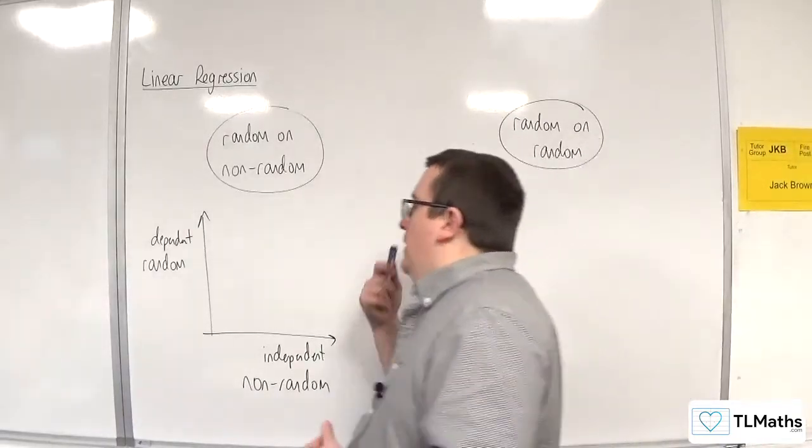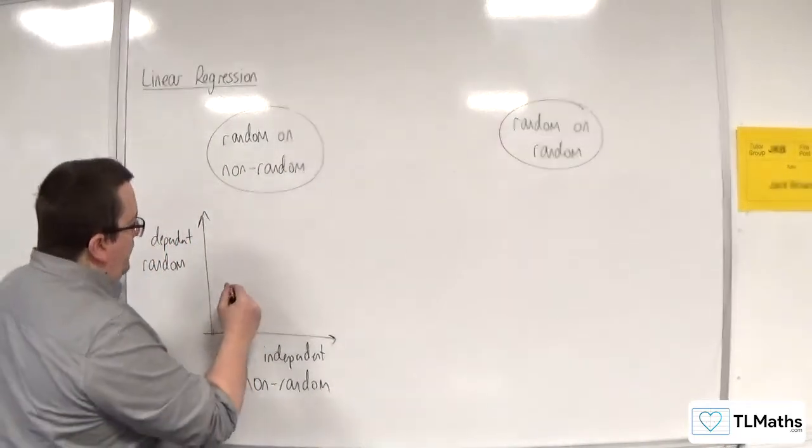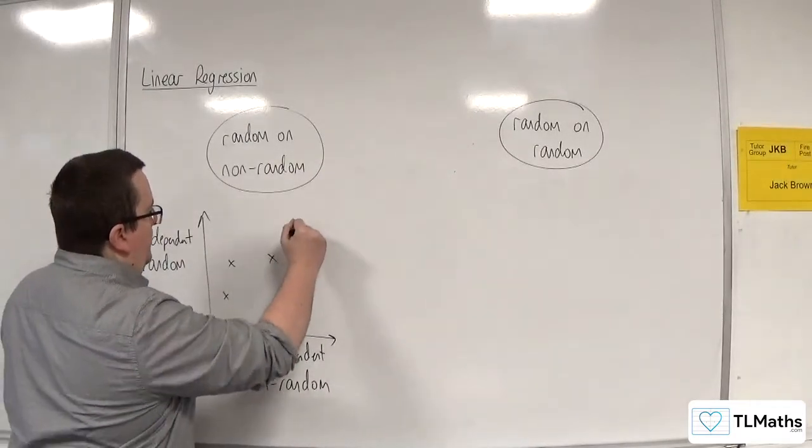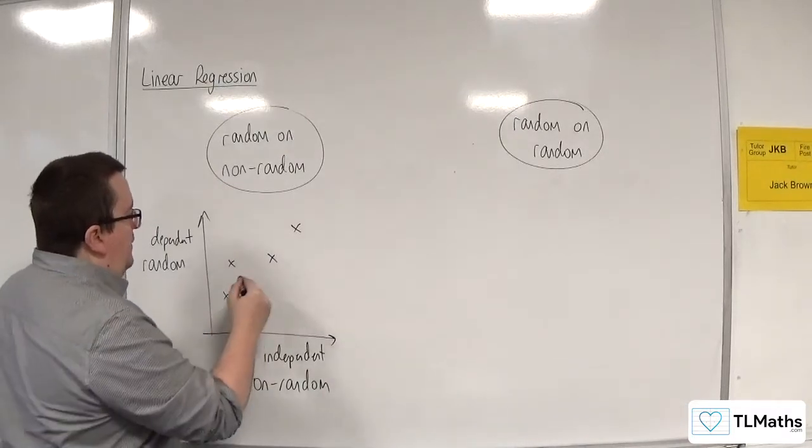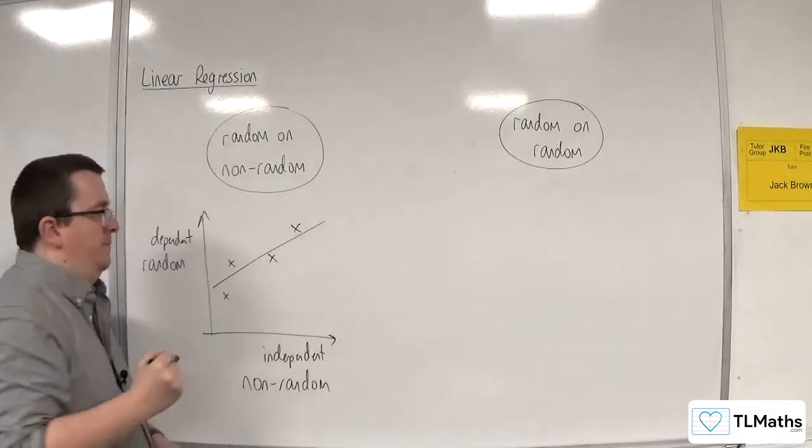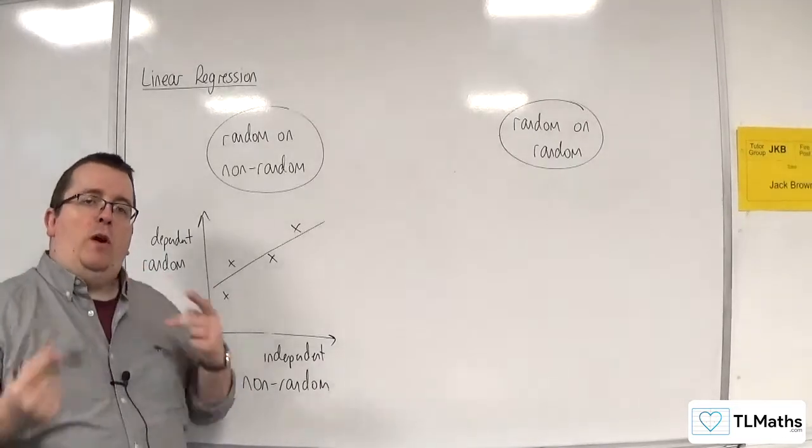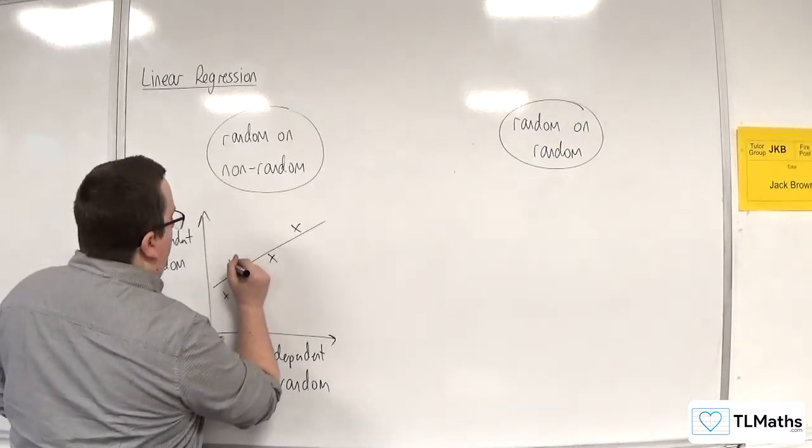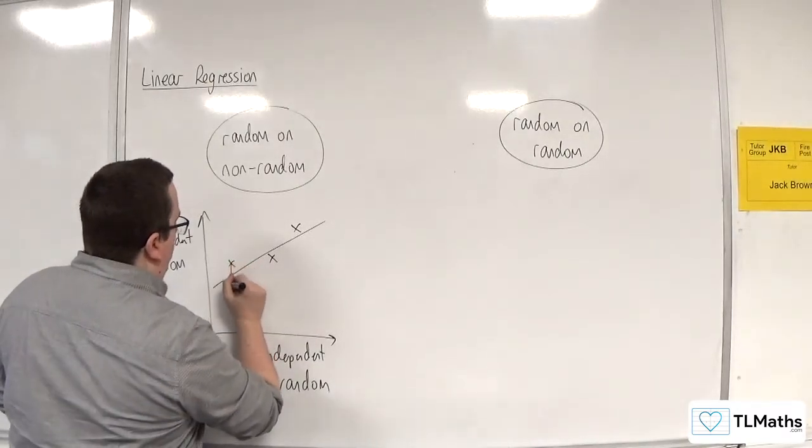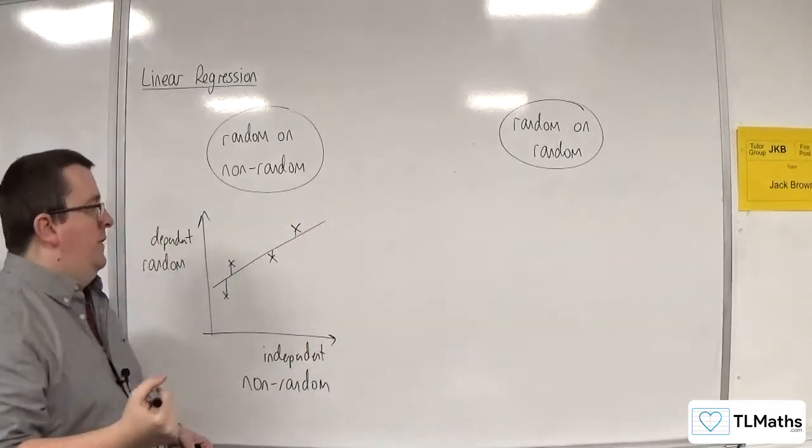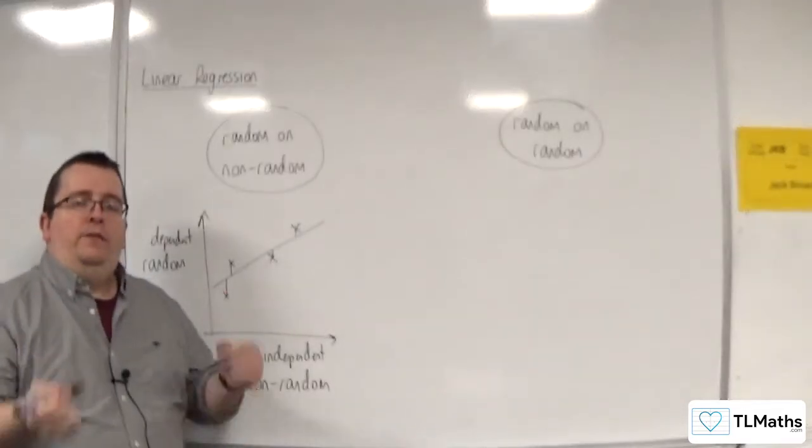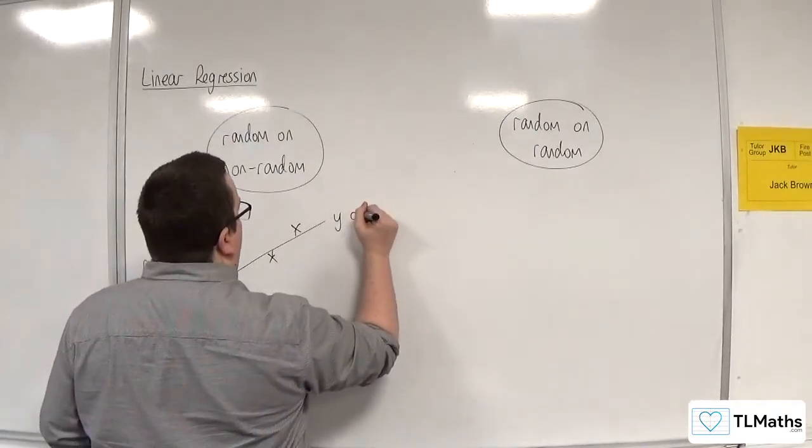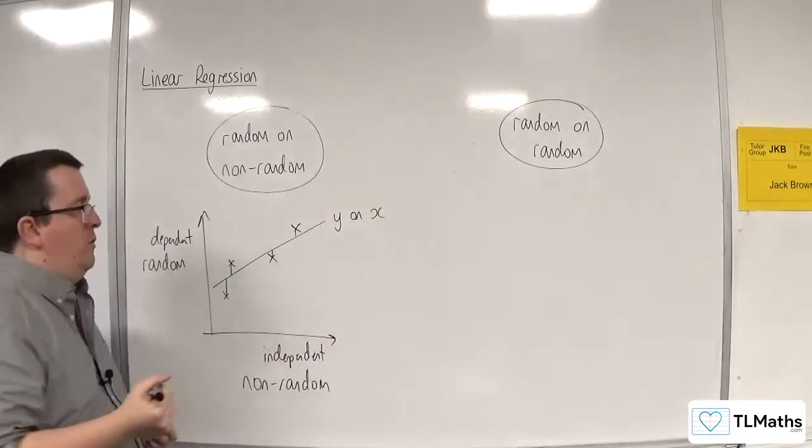Now when you plot your data, something like that, and then you draw your regression line. The regression line that you are interested in here is looking at the y values that you are getting. So you're only interested in the regression line that is y on x. So this would have to be a y on x regression line.